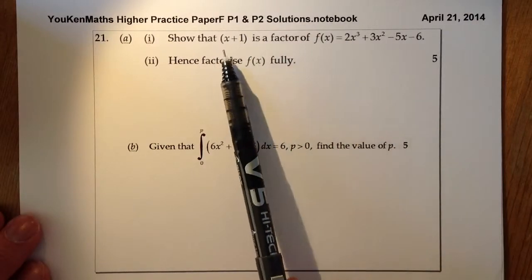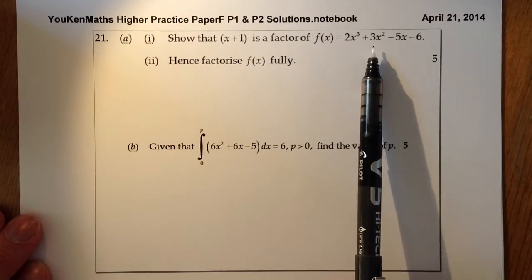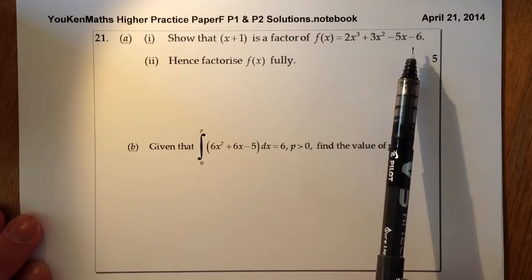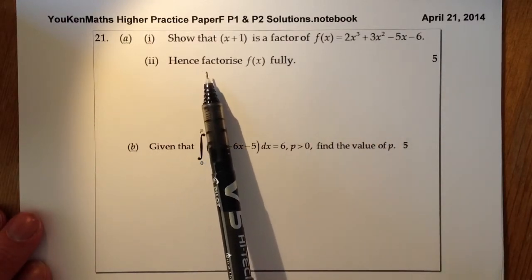So show that x + 1 is a factor of f(x) = 2x³ + 3x² - 5x - 6. Then we're going to factorise it fully.